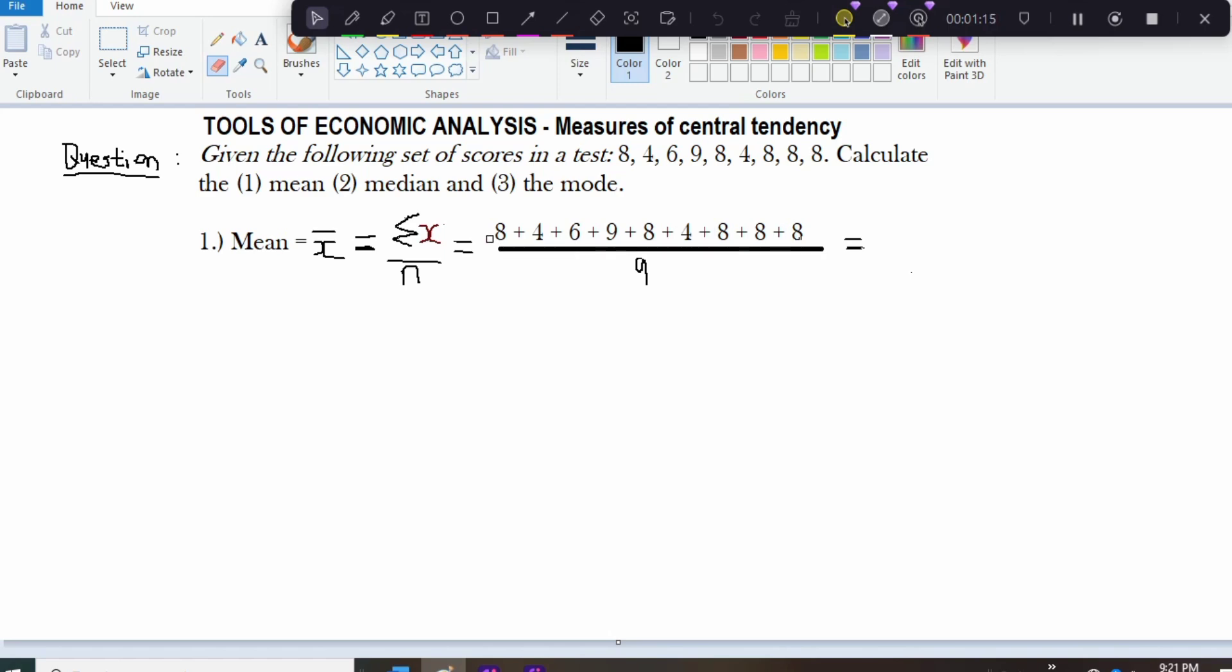So we have 9 values or items. So we are going to divide the sum of x by 9. So let us add up 8 plus 4 plus 6 plus 9 plus 8 plus 4 plus 8 plus 8 and plus 8 which gives us 63.